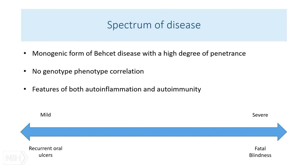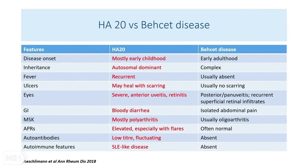We concluded that this is a disease which looks like monogenic Behçet's, with a very high degree of penetrance, no genotype-phenotype correlation. Patients have features of both auto-inflammation and autoimmunity — we considered it a spectrum. Some patients had only mild oral ulcers, while others had severe disease with a death and fatal blindness. The paper was published in January 2018.